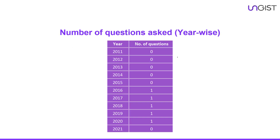Here is the detail of the number of questions asked year-wise. From 2011 to 2015, they did not ask even a single question from this topic. From 2016 to 2020, they have asked only one question from this topic, and in 2021 we have no question from this topic. So in total we have around five questions from this topic in these 11 years. This will be a very short video — only five questions. So let's discuss those questions.